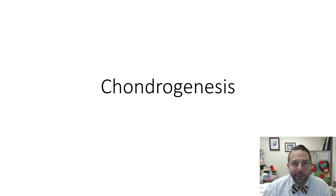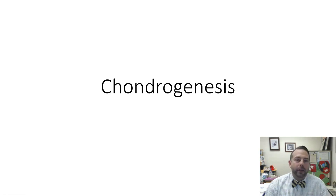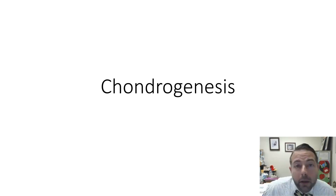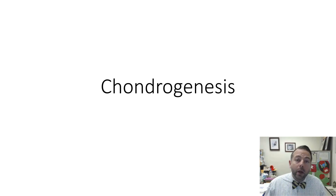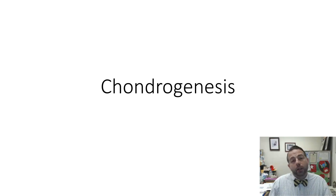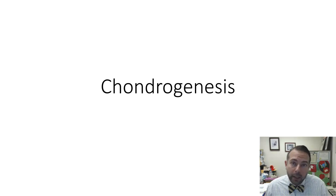Hey guys, Dr. Brown here with another exciting histology video. I thought for a fun change of pace I'd let you look at my face since I actually dressed up to come to school today. Today we're going to be talking about chondrogenesis — that is, how do we make cartilage tissue from its precursor tissue mesenchyme. Also at the end of the video we're going to briefly go over, once we make a cartilage, what are the two different ways that cartilage tissue can then grow and expand. So let's jump right into it.